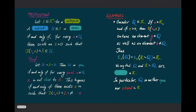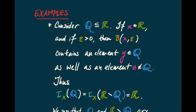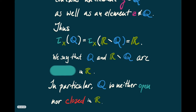Let's use these propositions in some examples. First, contemplate the rational numbers sitting inside the real line. If x is a real number and epsilon is greater than zero, then the ball of radius epsilon around x must contain a rational number — and for that matter, it also contains an irrational number. So the closure of the rationals is the same as the closure of the irrationals, which is the real line itself. When this kind of thing happens, we say that Q and R minus Q are both dense in R. Since the closure of Q is R, Q certainly can't be closed, but it can't be open either because the closure of its complement is also R. So Q is neither open nor closed in R, and the same follows for its complement.